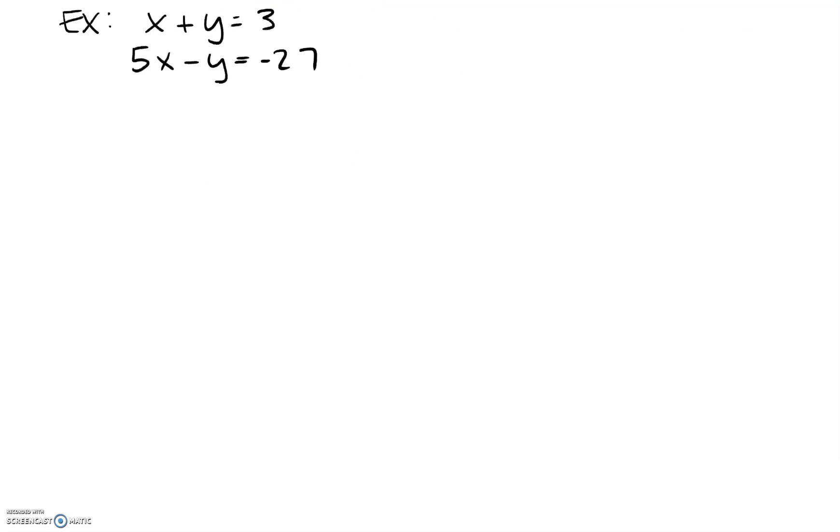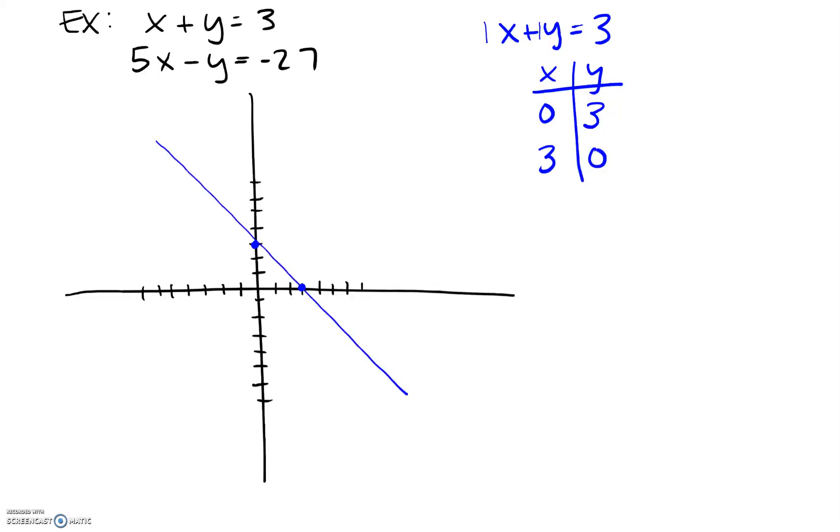Same example, I'm just going to rewrite it so I can scroll up on my tablet. If we wanted to graph these, we have $x + y = 3$. This line, in my opinion, is the easiest to graph using the intercepts. We can quickly see that if we set $x$ equal to zero, $y$ is just $3$. And if we set $y$ equal to zero, $x$ would be $3$. So we can go ahead and graph that particular line very quickly just looking at these two intercepts.